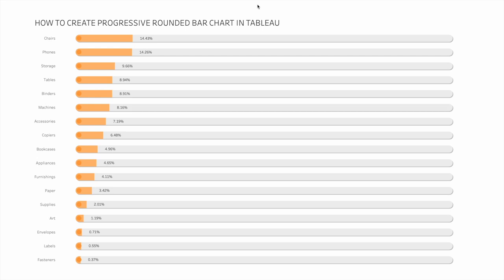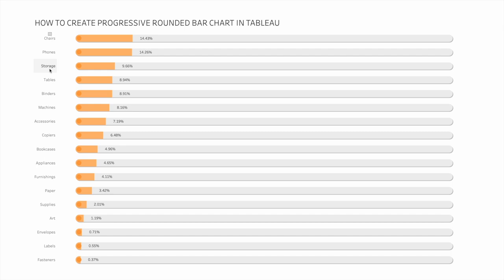As you can see on screen, we are showing the rounded progressive bar chart in Tableau, where we are showing the sales percentage contribution by each subcategory. For example, chairs are showing 14.43 percent of total sales, phones again 14 percent, and storage is showing 9.66 percent. In this chart we have created rounded bar edges, a slight shadow effect for each bar, and a button-kind-of shape at the starting of each rounded bar. You can use any shape you like.